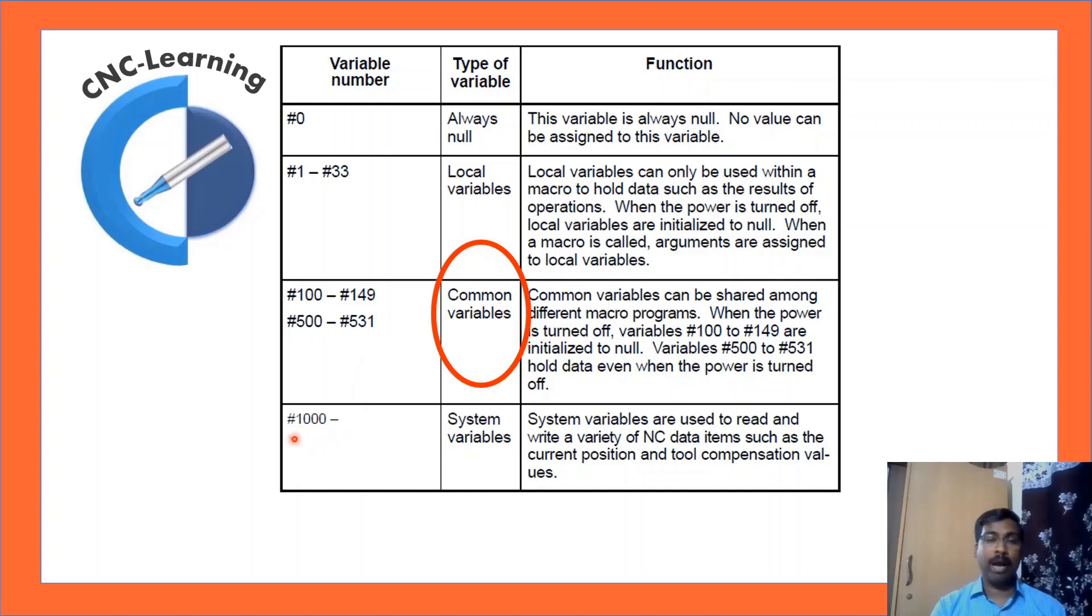And, the variables above #1000 are system variables. System variables are used to read and write a variety of NC data items such as the current position and tool compensation values. Now, for making programs, we will be using common variables #100 to #149.